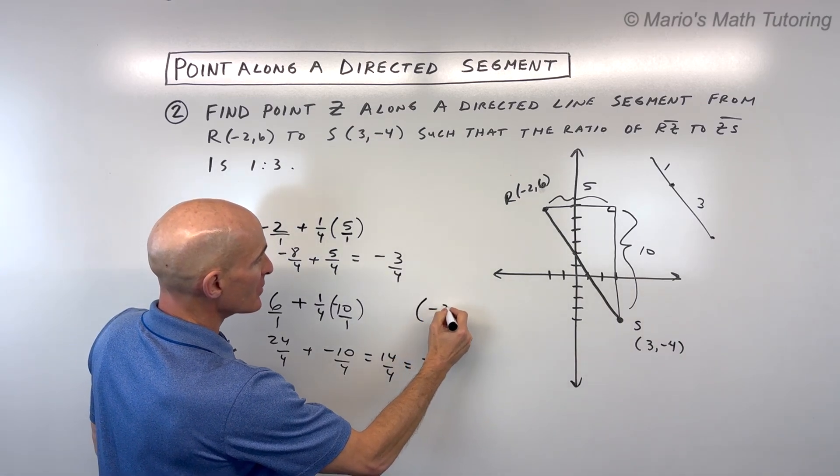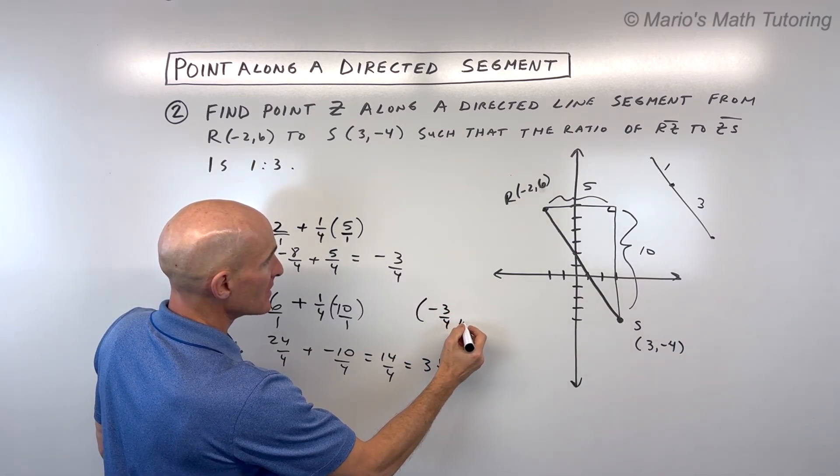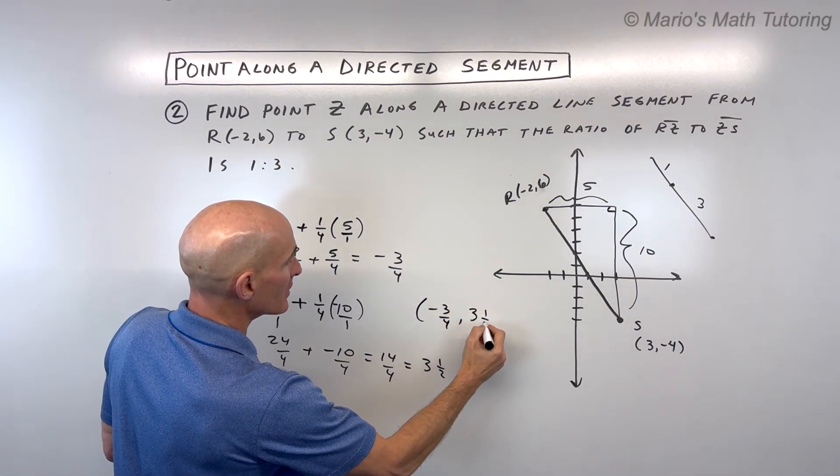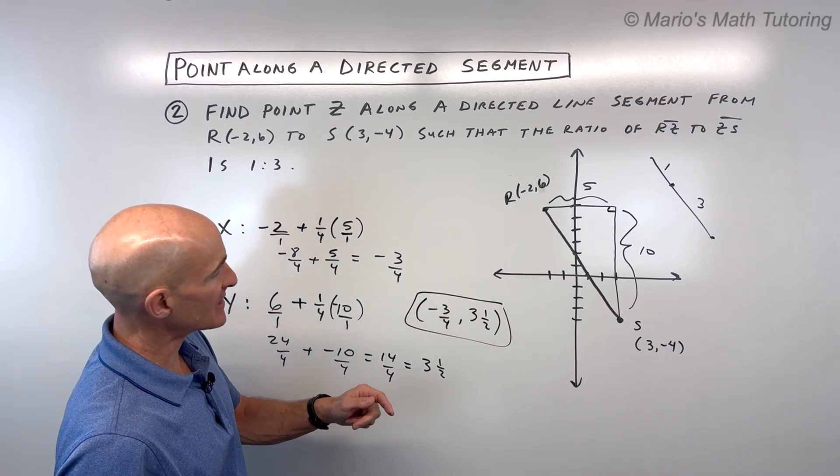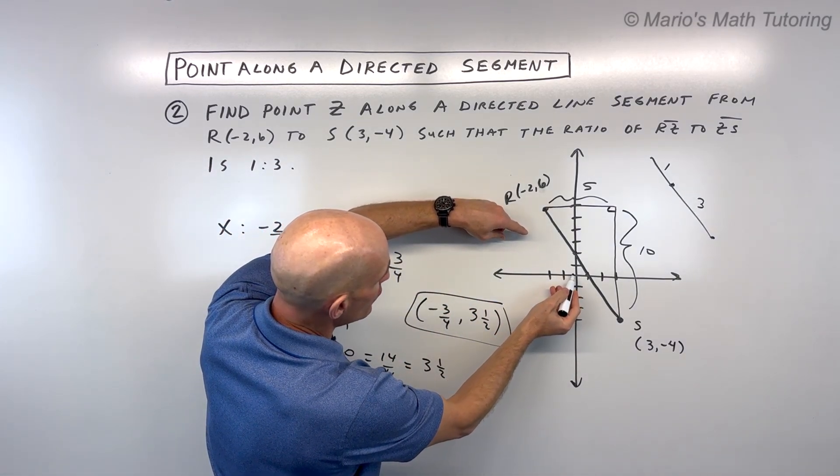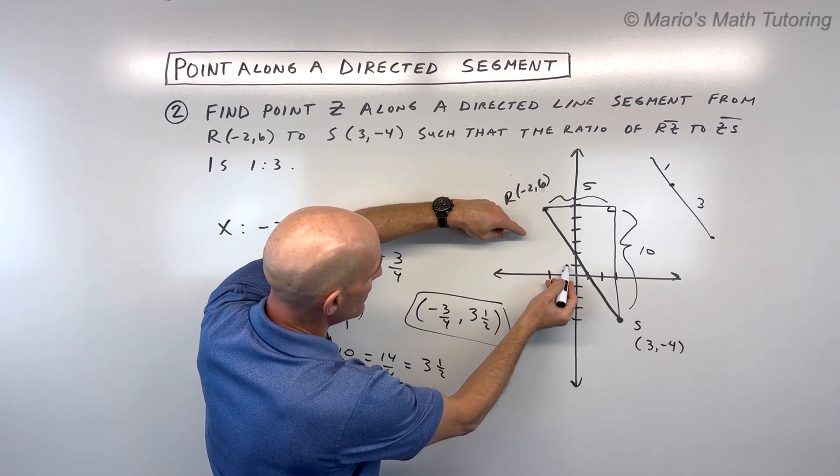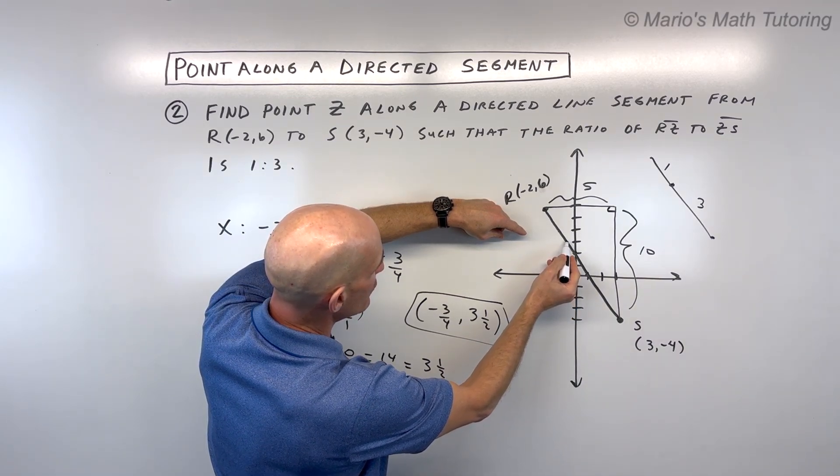So it looks like our point is going to be here at negative 3 fourths, comma, 3 and 1 half. Let's see if that makes sense in the context of this problem. So negative 3 fourths means we're going left 3 fourths, up 1, 2, 3 and 1 half.